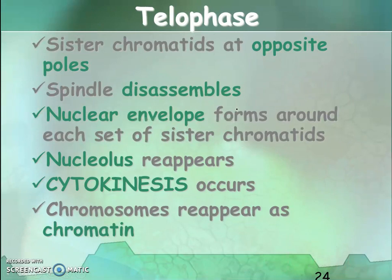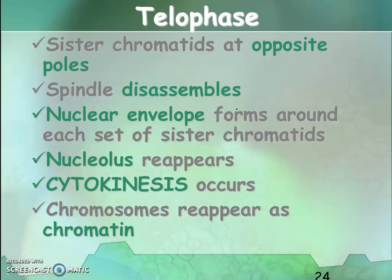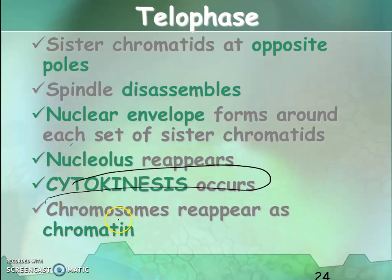Telophase is the last phase of mitosis. The sister chromatids are now at opposite poles, the spindles disassemble, and the nuclear envelopes — which had disintegrated in prophase — start re-forming. Each set of sister chromatids is at an opposite pole, the nucleolus reappears, and cytokinesis begins. The chromosomes revert back to their thread-like chromatin form.